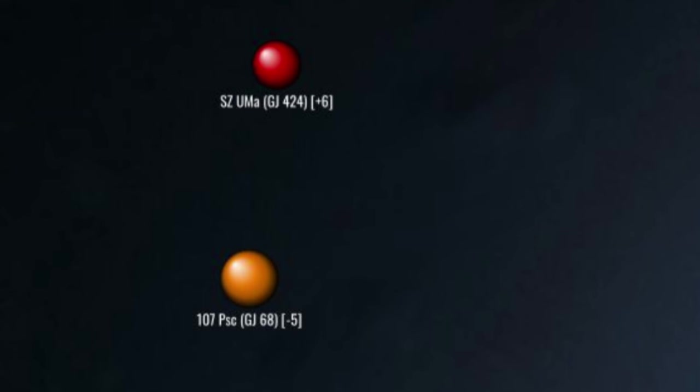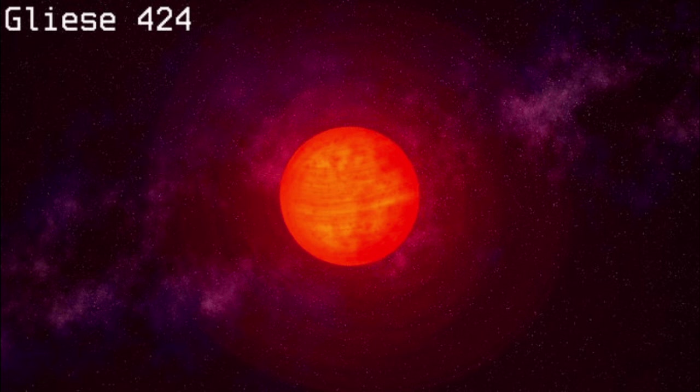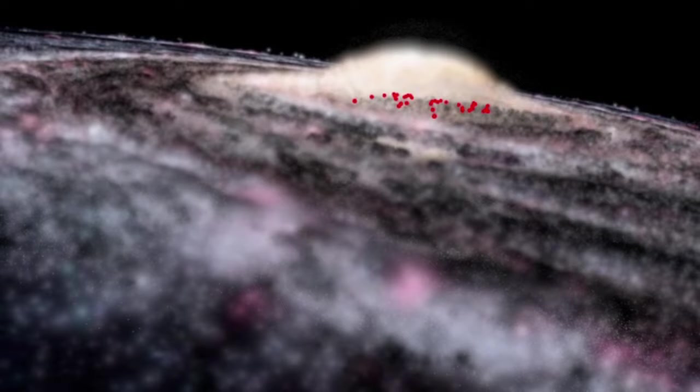11 parsecs north, we arrive at the red dwarf and flare star Gliese 424, a.k.a. SZ Ursae Majoris. 424's astonishingly slow rotation period, 150 days, is comparable to that of Barnard's star, and, like Barnard's star, is an indication that it is ancient, possibly as much as 12 billion years, or as old as the Milky Way itself.